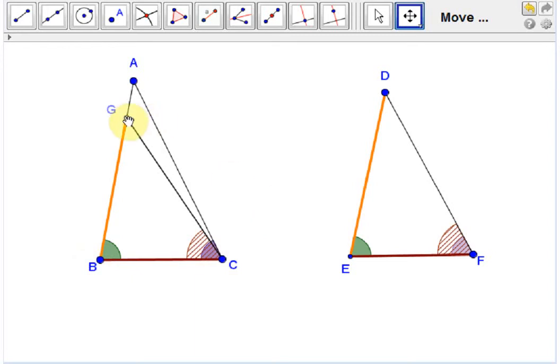Here we have a contradiction, because GCB is equal to DFE. DFE, in turn, is equal to ACB. So we have an angle which is smaller than something which is equal to itself.